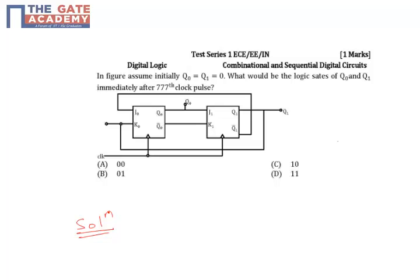In this question we have given a figure with some initial values, Q0 and Q1 equal to 0, and we have to find the output of Q0 and Q1 just immediately after 777 clock pulses. Solution: